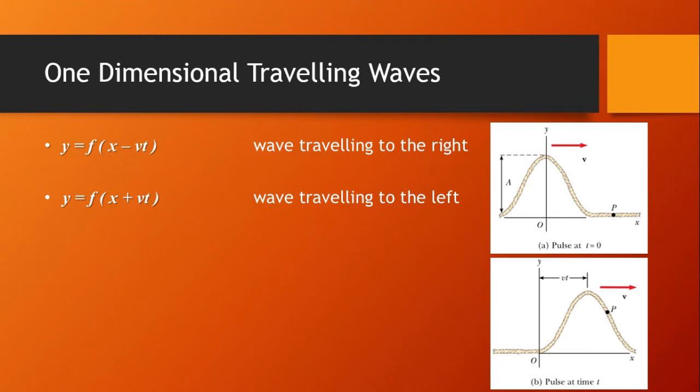Taking a stationary reference frame with its origin at zero, the wave function will be y equals f of (x minus vt). If the wave pulse travels to the left, the string displacement will be y equals f of (x plus vt).